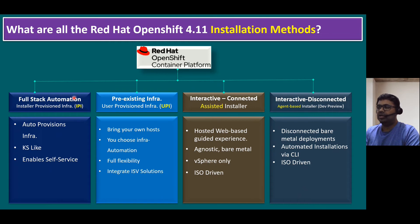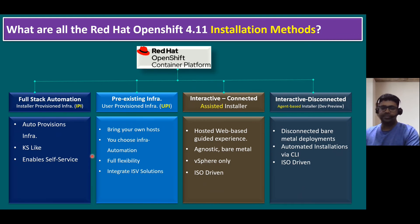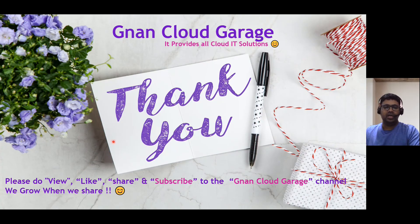As per Red Hat's recommendation, always use the IPI method. In our later sessions, I will show a couple of methods to install Red Hat OpenShift container platform — we'll try developer sandbox and also the self-managed Red Hat OpenShift container platform. If you're watching this video for the first time, please like, share, and subscribe to the Gnan Cloud Garage channel. If you're already subscribed, I appreciate all your support. Bye for now.